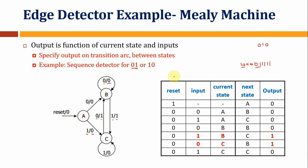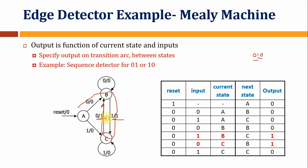For example, with input 0, 1, 0: the first 0 and 1 is one sequence detected, and then the 1 and 0 is another sequence detected. So the machine will detect 2 sequences for this input. The machine works with overlapping detection.